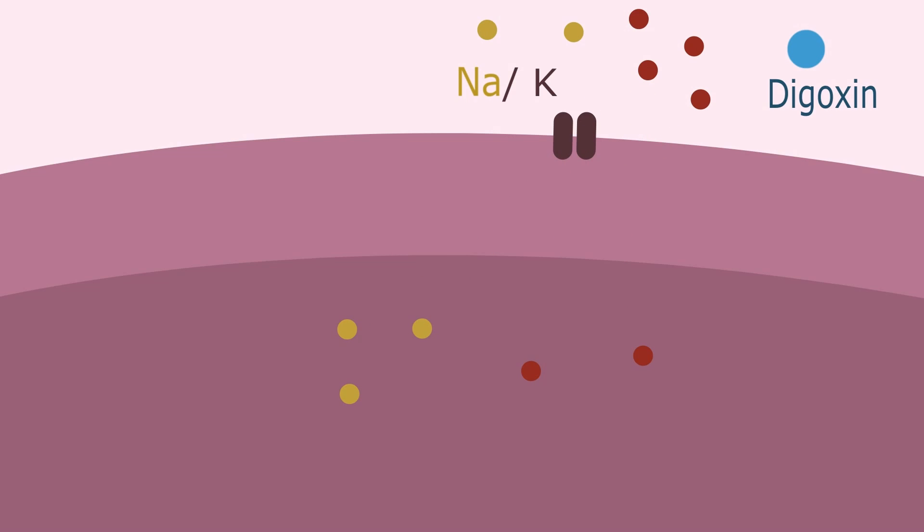When digoxin binds to the channel and blocks it, sodium will no longer be transported out of the cell and therefore sodium will accumulate inside of the cell.